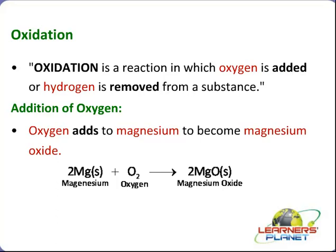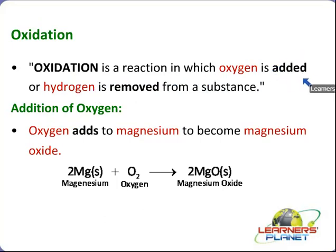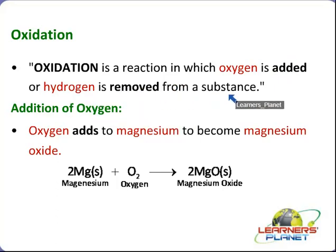Now moving to our next topic: oxidation. We have done all the types of reactions, and there is now a new thing — oxidation. What do you mean by oxidation? Oxidation is a reaction in which oxygen is added to a substance, or hydrogen is removed from a substance.